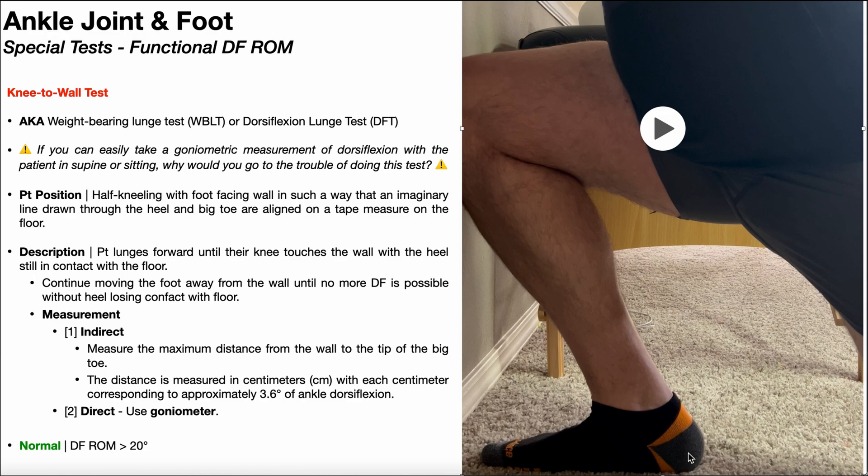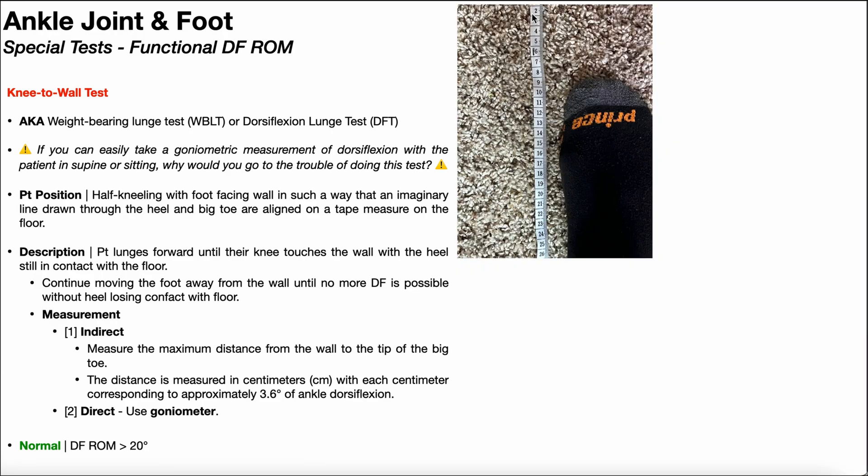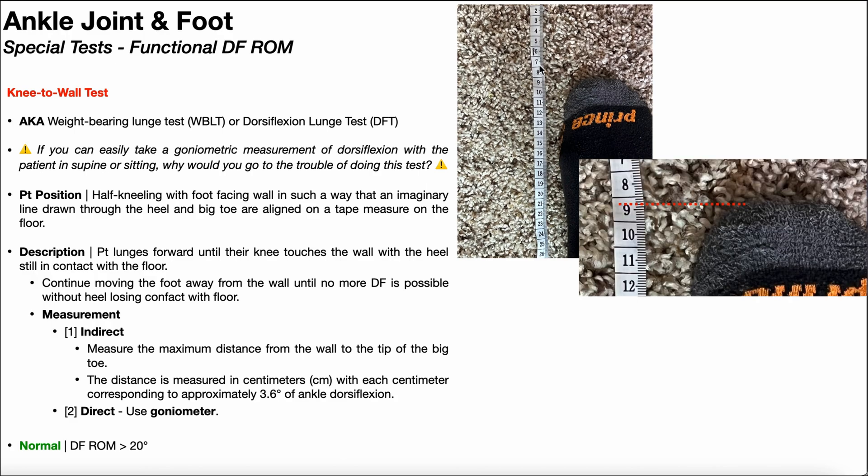So now I need to get a measurement of dorsiflexion here. And there's two ways to do it. There's an indirect method and a direct method. Now the direct method is kind of obvious. You would just use a goniometer using the typical landmarks for measuring dorsiflexion. But I can also do this via an indirect method. So here I have my tape measure parallel to my foot. And I'm going to measure the maximum distance from the wall to the tip of my big toe. And this distance is measured in centimeters. And it looks to me that it's about 8.3 centimeters.